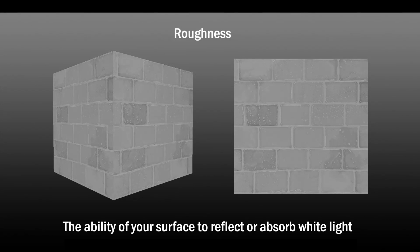The next map we'll look at is the Roughness Map — again a bit of an odd map if you haven't seen these textures before. Roughness essentially determines the ability of your surface to reflect or absorb white light. The more white your map is, the less light it will bounce back and the more it will absorb. The more black your texture is, the more light it reflects and the less it takes in. So white is rough and black is very smooth.